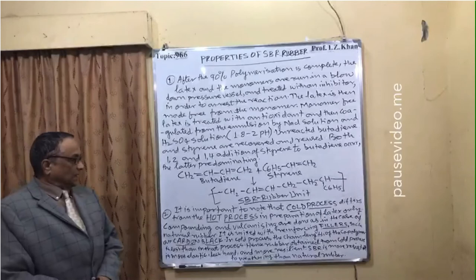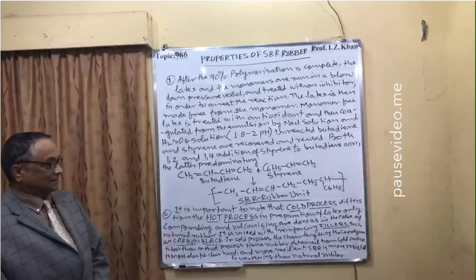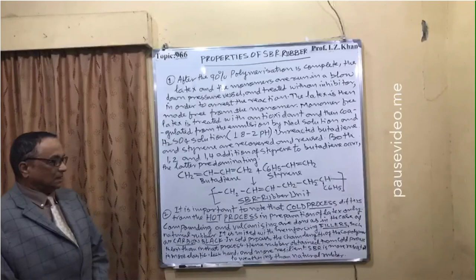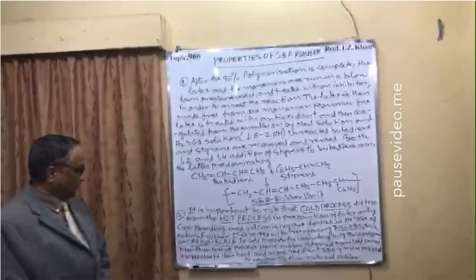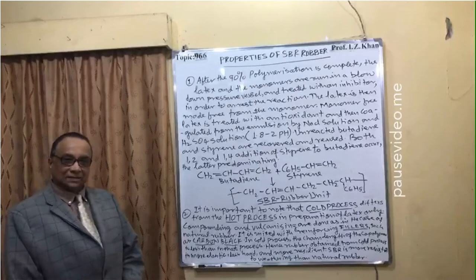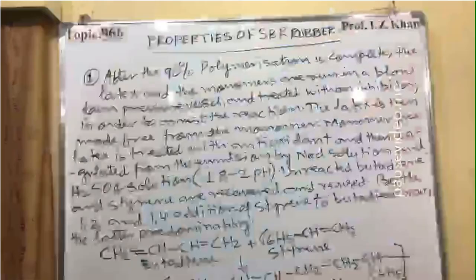Point two: it is important to know that the cold process differs from the hot process only in the preparation of latex. Compounding and vulcanizing are done as with natural rubber, mixed with reinforcing fillers such as carbon black. In the cold process, the chain length of the co-polymer is shorter, so the rubber is more elastic, less hard, and more resilient. SBR is more resistant to weathering than natural rubber.